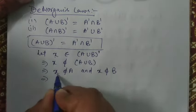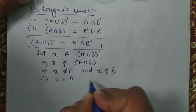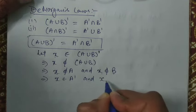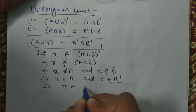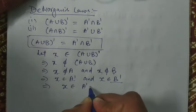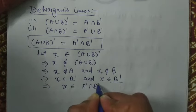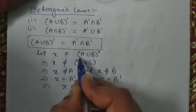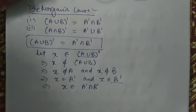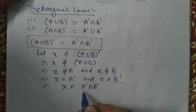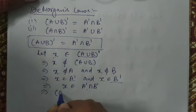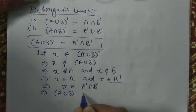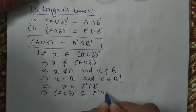Now, X does not belong to A means X belongs to A complement, and X does not belong to B means X belongs to B complement. So if an element X belongs to both A complement and B complement, then it means X belongs to the intersection of A complement and B complement. This implies that the complement of A union B is a subset of A complement intersection B complement.